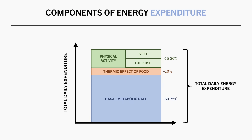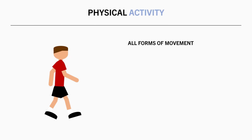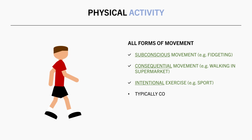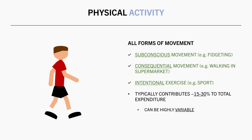The third component of energy expenditure is physical activity. For this video, physical activity refers to all forms of movement — including subconscious movements like fidgeting, consequential activity such as walking around the supermarket, and intentional exercise like playing sport. This typically contributes around 15-30% to total daily energy expenditure in most cases, although physical activity is subject to the largest variability between individuals. Highly active individuals will obviously burn more energy from physical activity, while sedentary individuals will burn less.